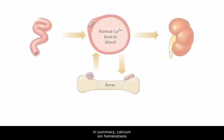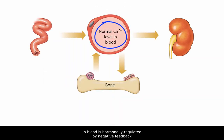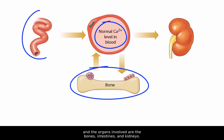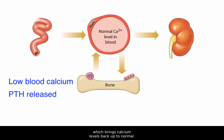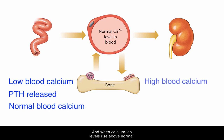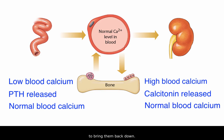In summary, calcium ion homeostasis in blood is hormonally regulated by negative feedback, and the organs involved are the bones, intestines, and kidneys. When calcium ion levels in blood fall below normal, the parathyroid glands secrete PTH, which brings calcium levels back up to normal. And when calcium ion levels rise above normal, the C-cells of the thyroid gland secrete calcitonin to bring them back down.